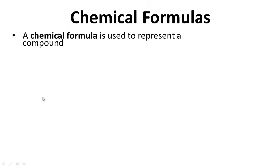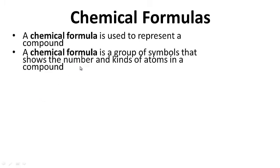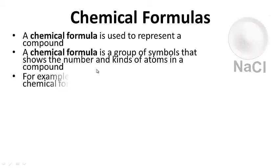Chemical formulas. A chemical formula is used to represent a compound or molecule. A chemical formula is a group of symbols that shows the number and kinds of atoms in a compound.